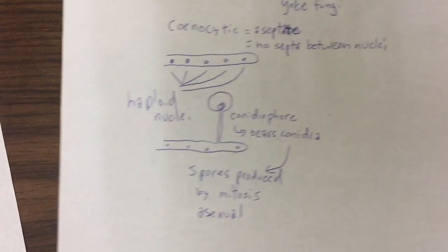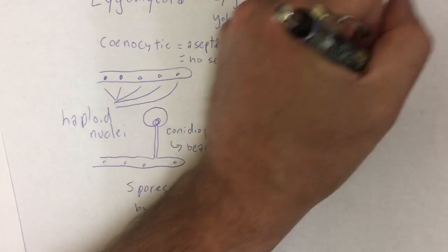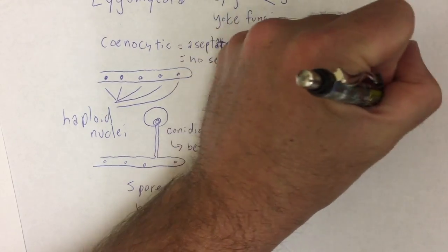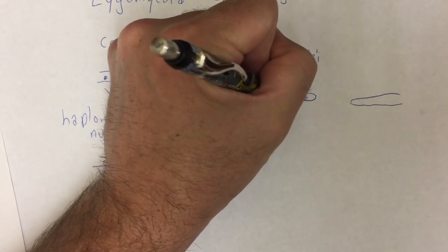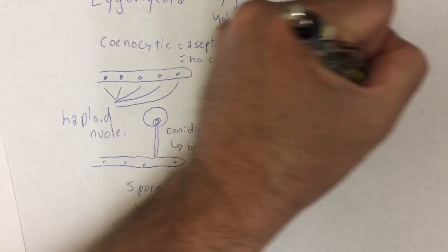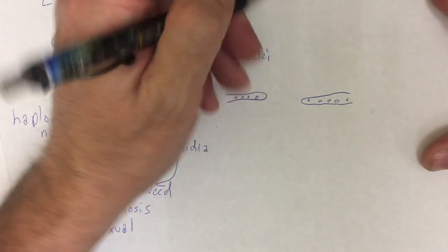All right, but suppose we want to have the sexual part of the life cycle. Well, how does that happen? You get two hyphae that are of different mating types.